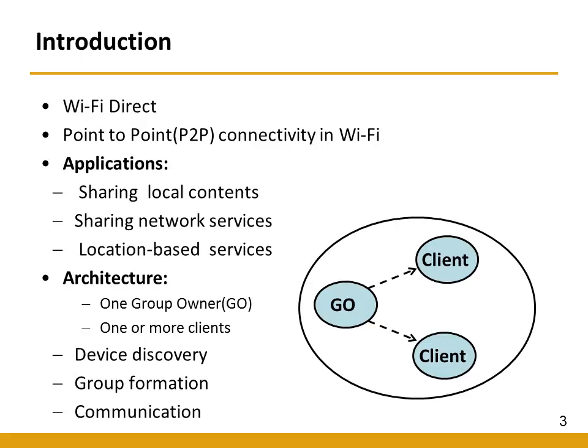This kind of point-to-point or device-to-device communication was already present in Wi-Fi, but it did not contain device discovery, power saving, and most importantly, the presence of AP was a must for this kind of point-to-point connectivity. Wi-Fi Direct overcomes all these shortcomings and provides easy, fast, and seamless connectivity between nearby devices without any AP.